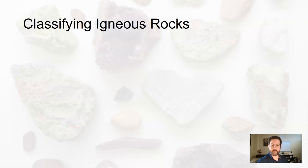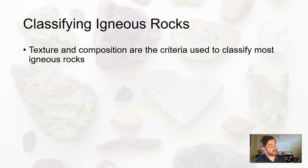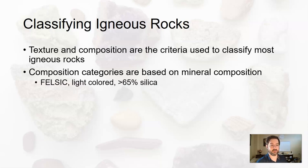When classifying igneous rock in general, we look at both texture and composition — both of which we can eyeball. Texture is how it looks. Composition — we assess chemical composition from the color. Felsic is lighter in color, meaning 65% or more of the rock is made up of silicate minerals. Intermediate is 53 to 65%. Mafic is dark colored, around 45 to 52% silica.